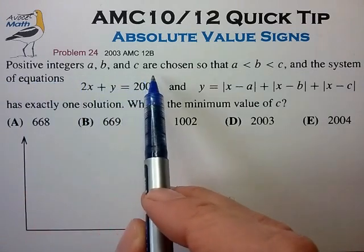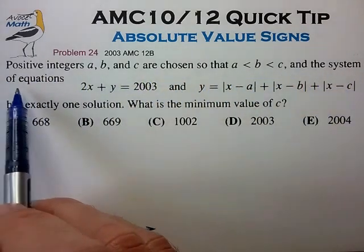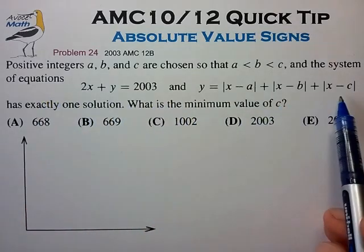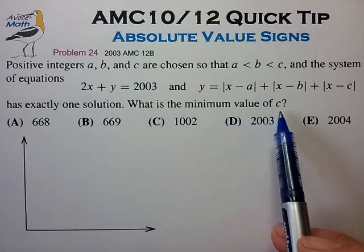Positive integers A, B, and C are chosen so that A is less than B is less than C, and the system of equations shown has exactly one solution. What is the minimum value of the parameter C?